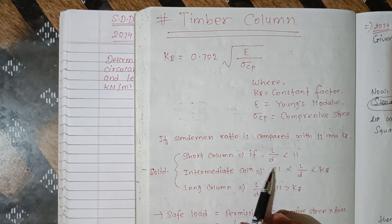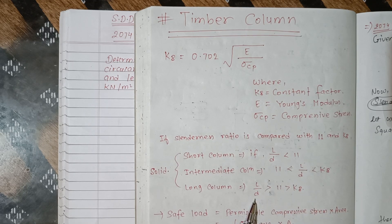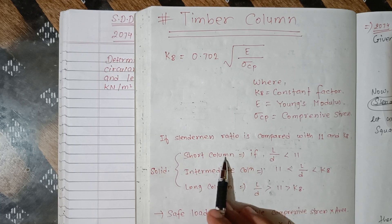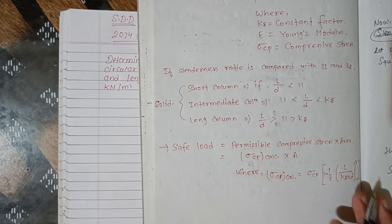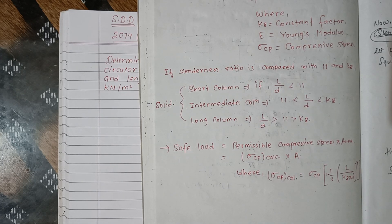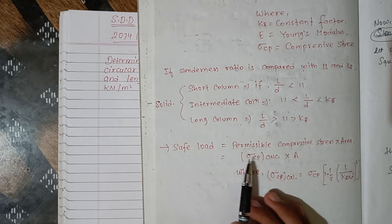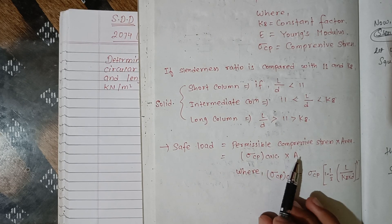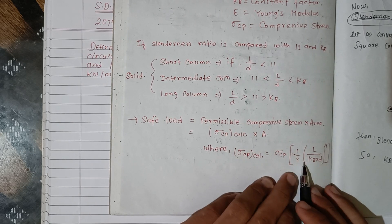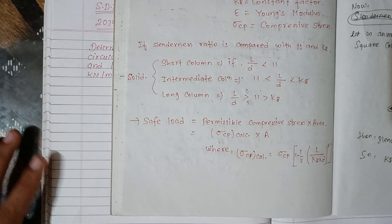For a short column, FCP is equal to FC. For an intermediate column and long column we change the formula. Safe load is equal to permissible compressive stress into area. σcp(calculated) = FC × (1 − (1/3) × (L / (K8 × D))⁴).